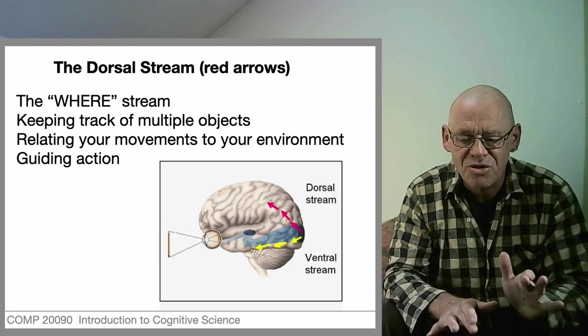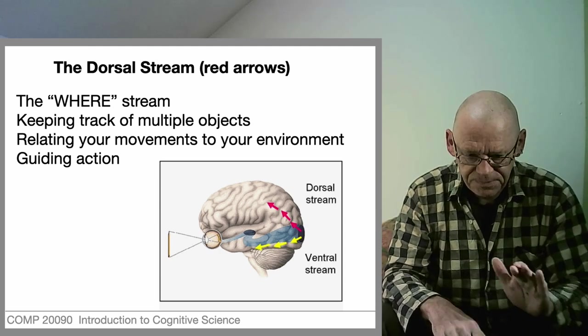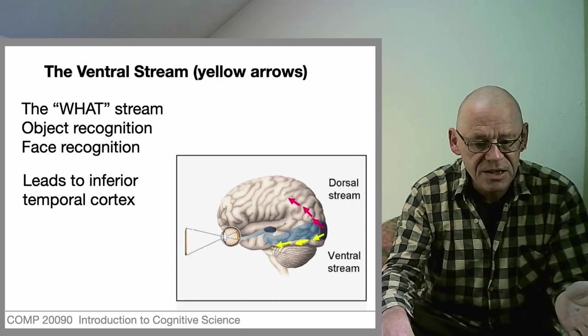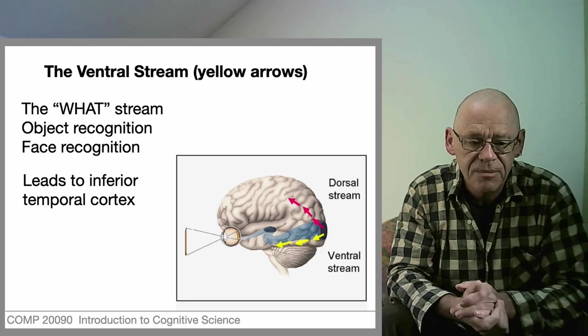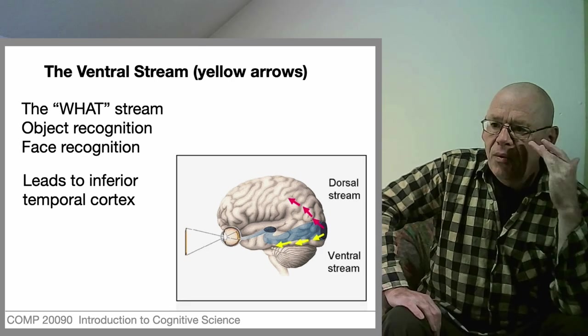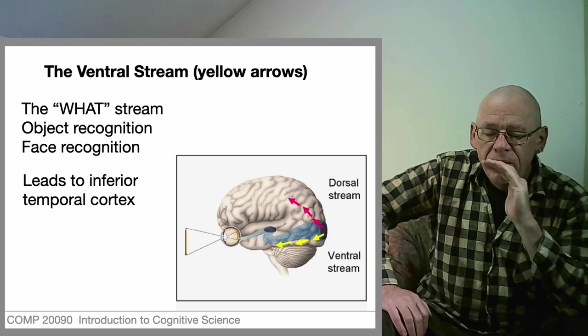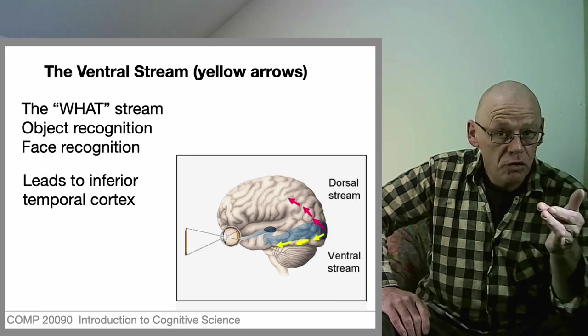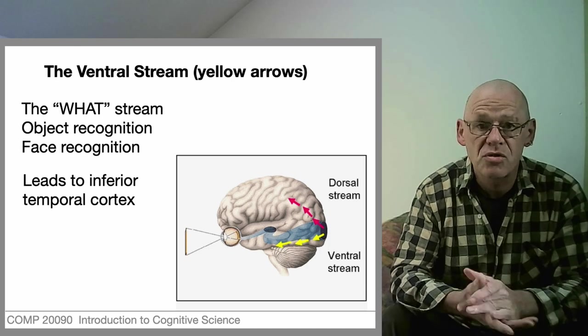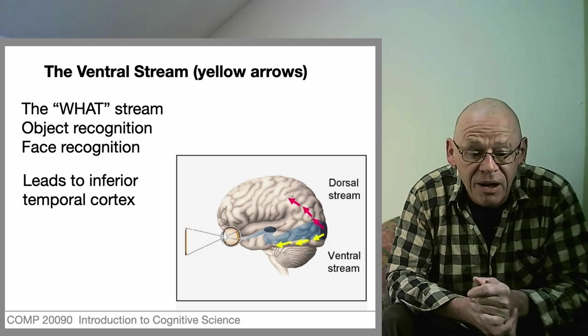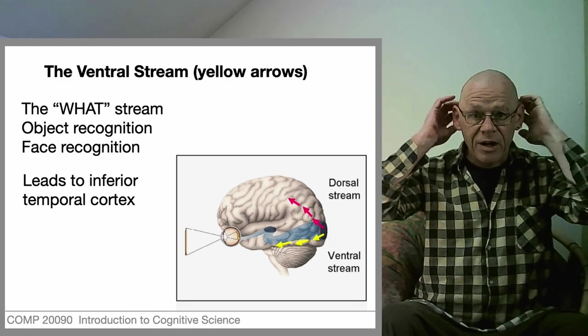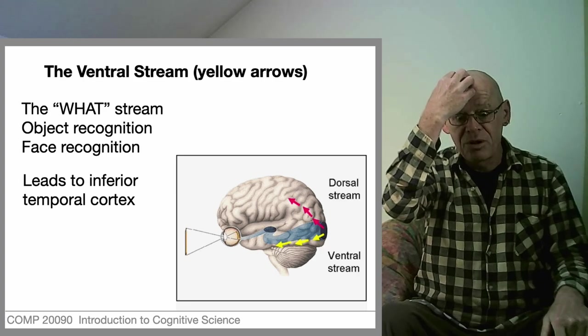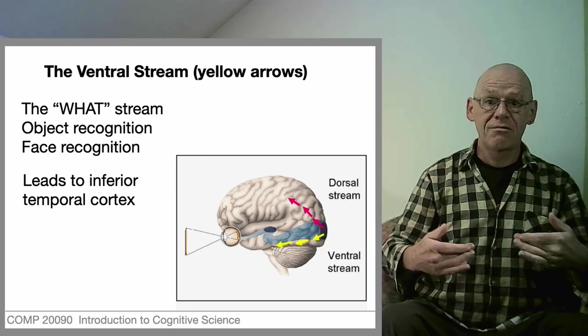The ventral stream shows us that seeing involves something else as well. We might call this the 'what' stream. Activity that we record here in the brain is related to, as it were, the meaning of what we're looking at, and not to movement. That is the ability to name things, to recognize things, to pick out things, to recognize faces. This is a very importantly different job. On the one hand we have the business of not bumping into things and catching baseballs, and on the other hand we have the business of recognizing things and being able to name them.